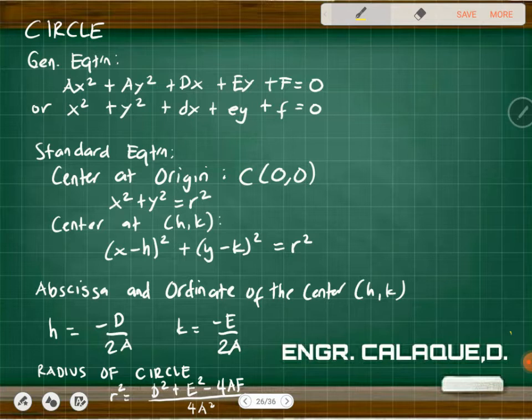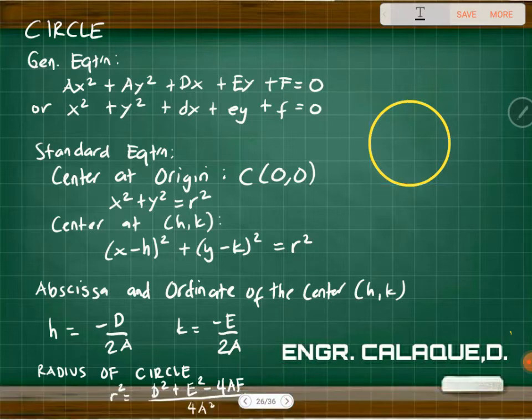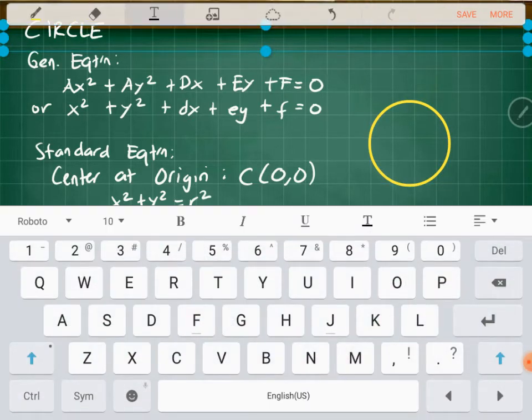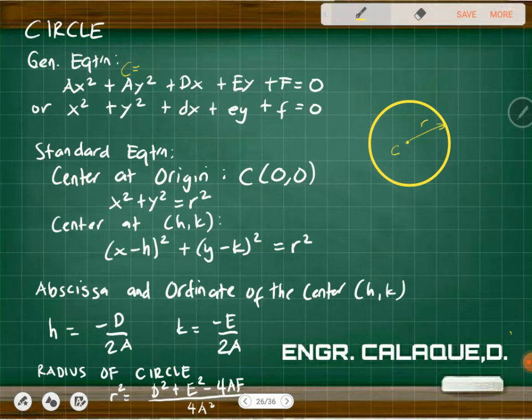Alright, let's continue. This time let's talk about circles. So we have here the center, that's our center, and then we have the radius. The general equation of the circle is: x squared plus c y squared plus dx plus ey plus f equals zero, or x squared plus y squared plus dx plus ey plus f equals zero.